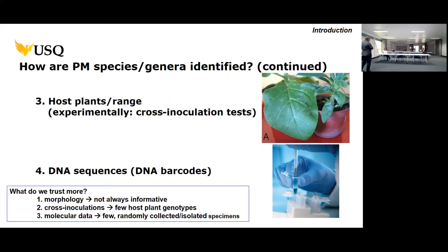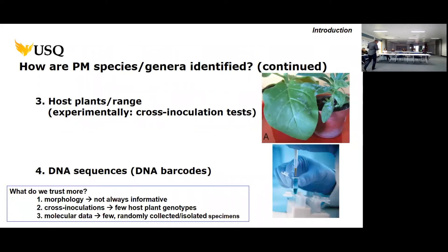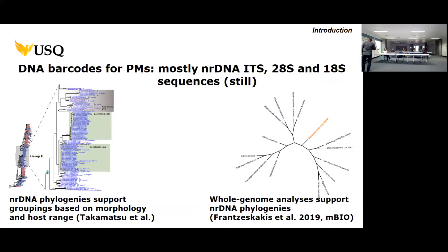We have these four tools to identify powdery mildew species. In the 21st century, most final identifications are based on DNA sequences only, which is quite reliable. However, we only have sequences from a few randomly collected specimens. In terms of host range experiments, we only use a limited number of host plant genotypes. And morphological descriptions are not always as detailed or informative as they could be.